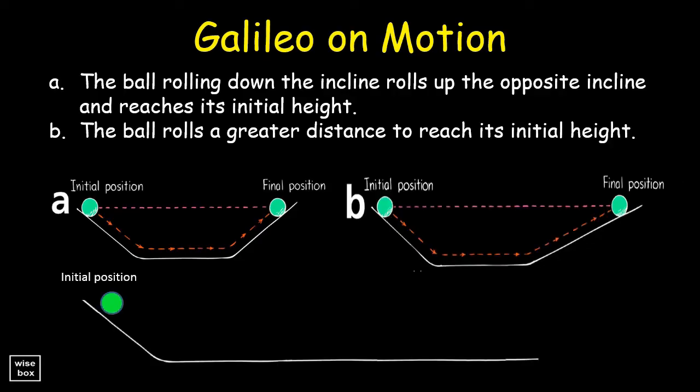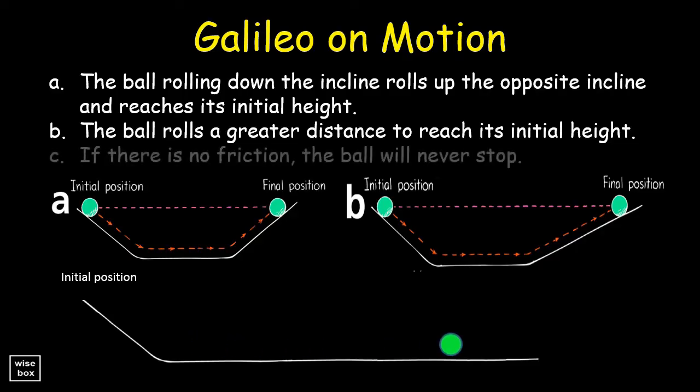Now when the second plane was made horizontal, what do you think happened? Of course, the ball rolled and eventually stopped.